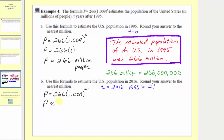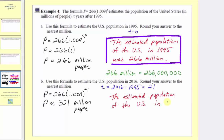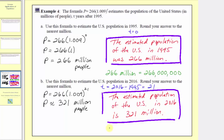Because p is approximately 321, this represents a population of 321 million people. The estimated population of the US in 2016 is 321 million, which in decimal notation would be 321,000,000.